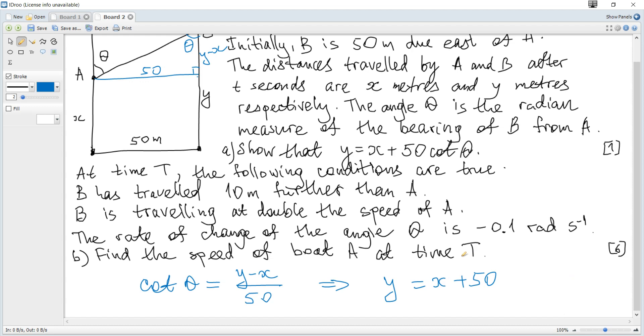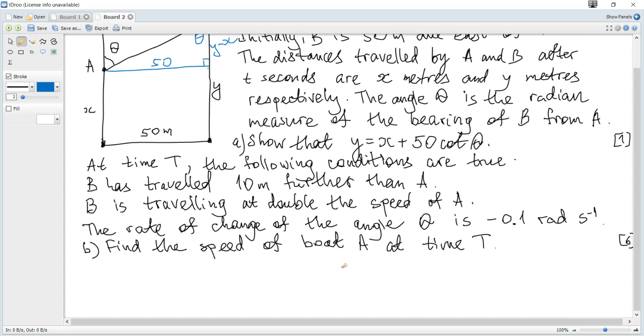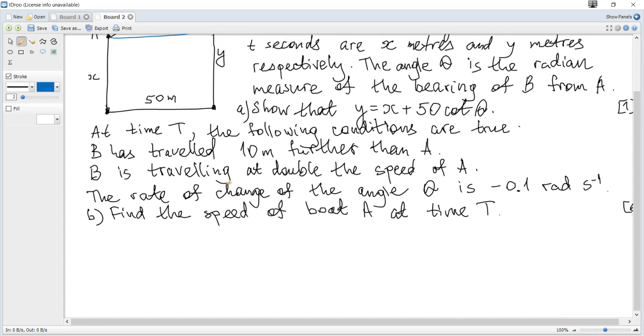At time T the following conditions are true. B has traveled 10 meters further than A. B is traveling at double the speed of A. Speed is the rate of change of the distance. So dy/dt is 2 dx/dt.